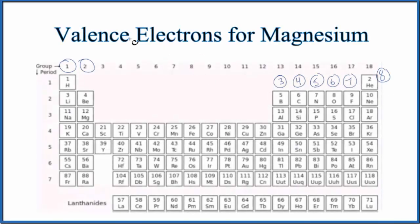In this video, we'll look at the number of valence electrons for the magnesium atom, Mg. So there are two ways we can figure out the number of electrons in the valence shell for magnesium.